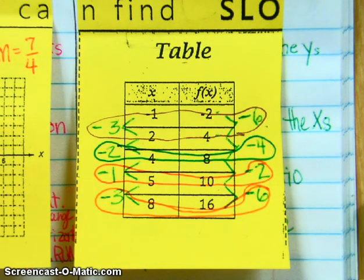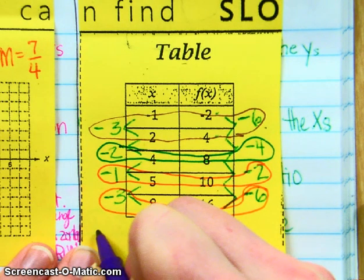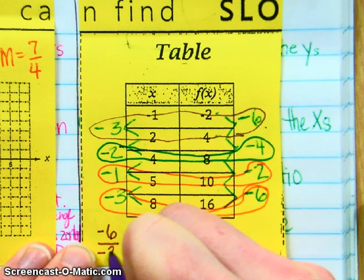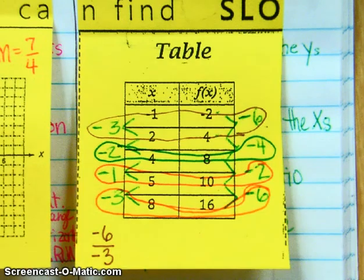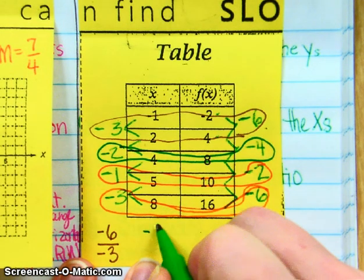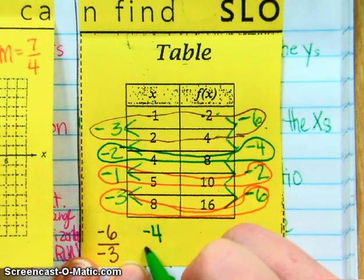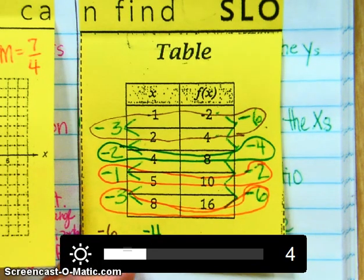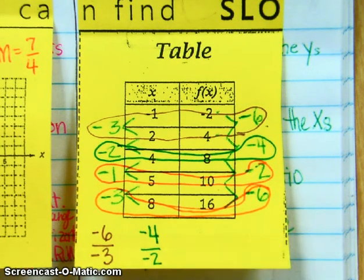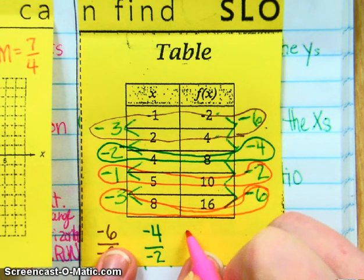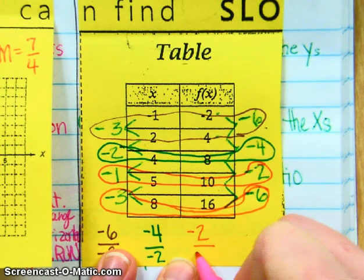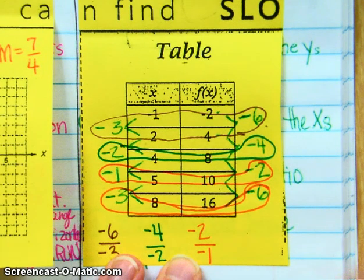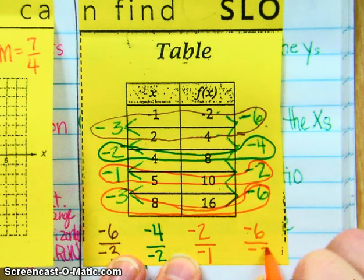So here, the y change over the x change, so it's negative 6 over negative 3. Then in the green we've got negative 4 change in y over negative 2 change in x. Negative 2 over negative 1, and then we've got negative 6 over negative 3 again.